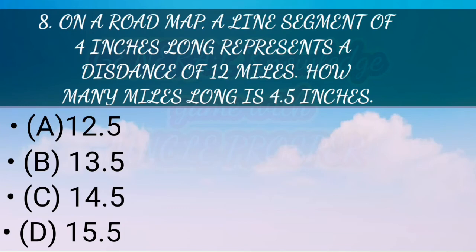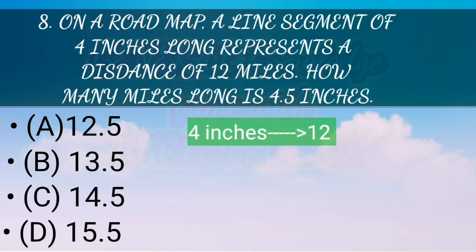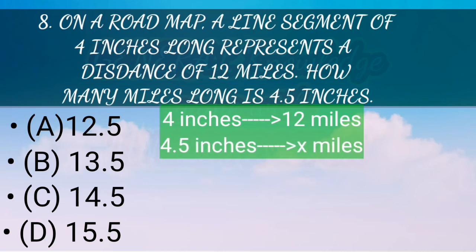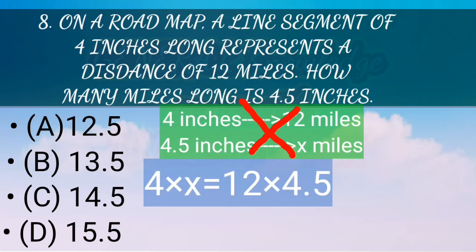Question eight: On a road map, a line segment of 4 inches represents a distance of 12 miles. How many miles long is 4.5 inches? This is a map-reading question in the general paper. I use a method called simple proportion. We write: 4 inches corresponds to 12 miles, and 4.5 inches corresponds to x miles. Cross-multiplying gives 4x = 12 × 4.5. Dividing both sides by 4, x = 3 × 4.5.